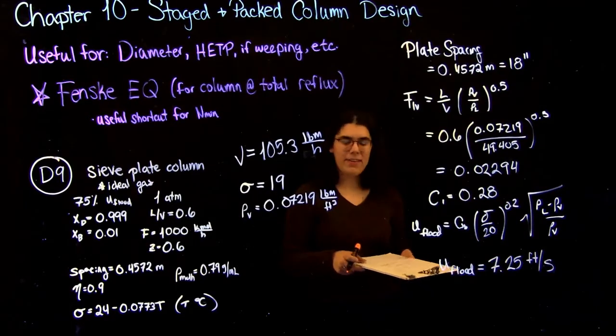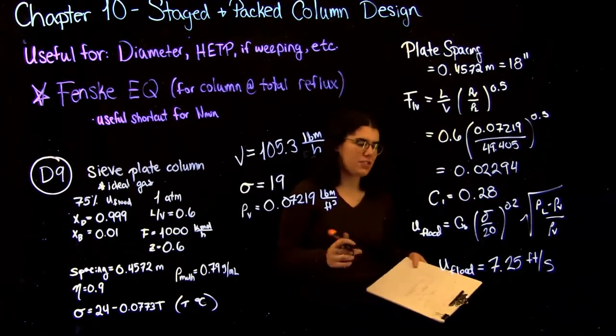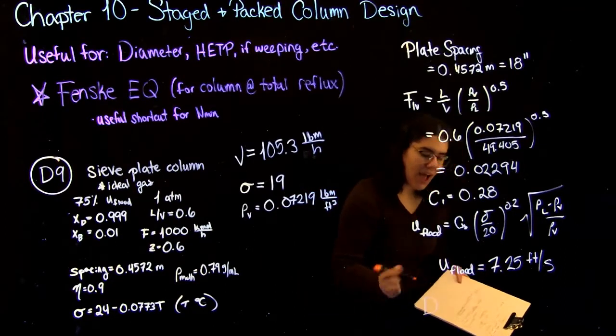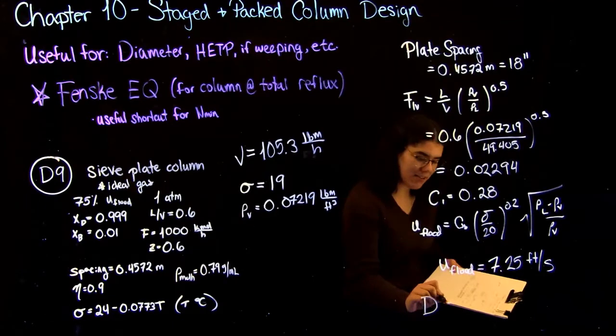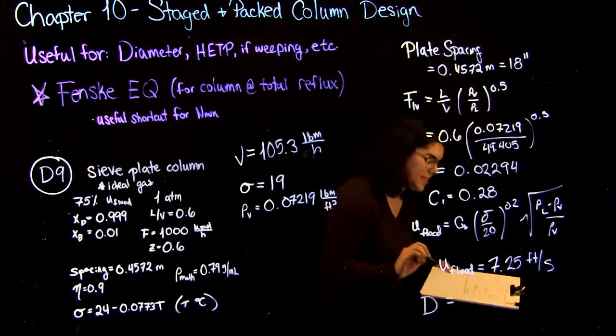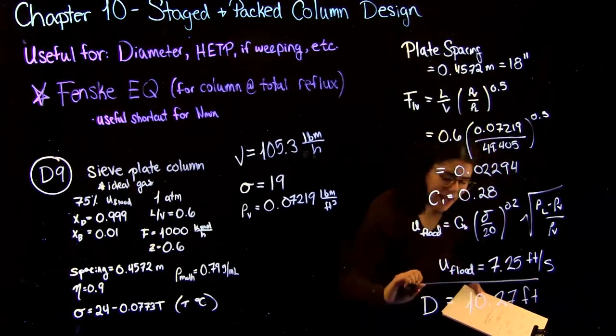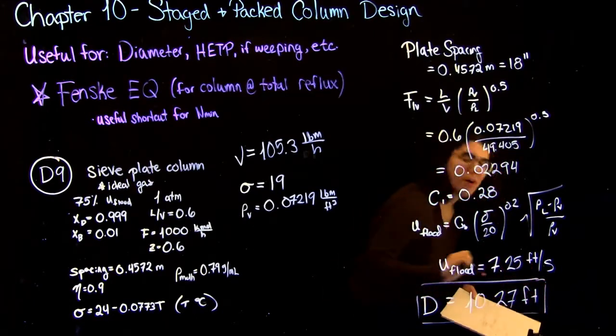So now we can just plug everything into our diameter equation that I showed at the very beginning. Again, double check your units to make sure that everything cancels to give you an answer in feet in the end. And if you do that, you should get a diameter of 10.27 feet. And that is how you do these sizing problems.